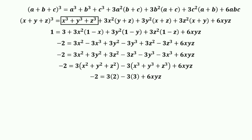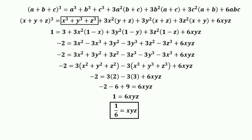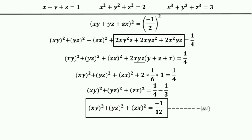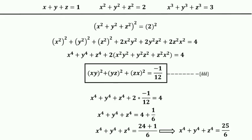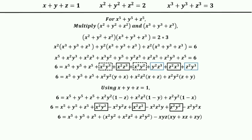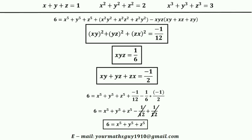After putting in the values we get negative 2 equals negative 6 plus 9, so 6xyz equals 1, giving xyz equals 1 by 6. We found xyz only by using the (a+b+c)³ identity as promised. The remaining solution is the same as method one: we find (xy)²+(yz)²+(zx)² equals negative 1 by 12, then x⁴+y⁴+z⁴ equals 25 by 6. For the fifth power, multiplying the second and third power sums and substituting, we get 6 equals x⁵+y⁵+z⁵.